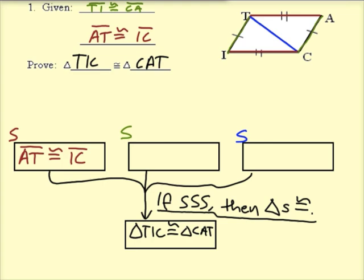So which pair of sides do we have? I know A, T is congruent to I, C, and the reason that I know that to be true is that's given information. Likewise, the green segments, segment T, I and C, A are congruent for the same reasons. We've got given information.